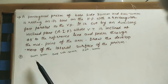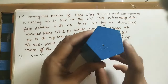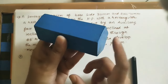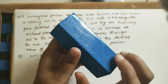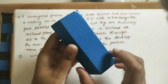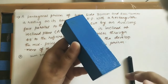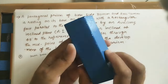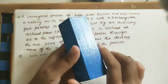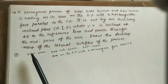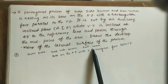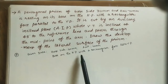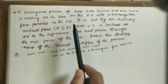For a pentagonal prism, there are two pentagons — one on each side — which we call the base. These two pentagons are connected by rectangular faces. There are five sides on the pentagon, so there are five rectangular faces. Now, the given data: base side is 30 mm, axis is 70 mm, and it is resting on its base on the HP.